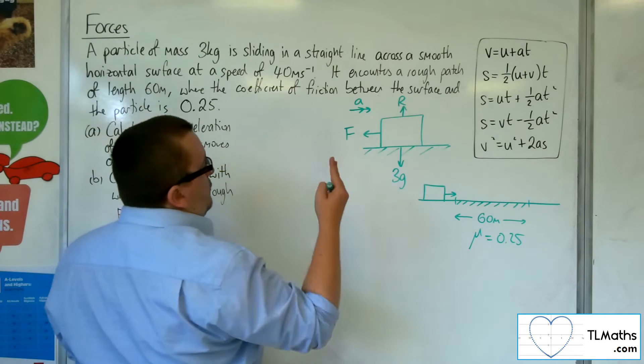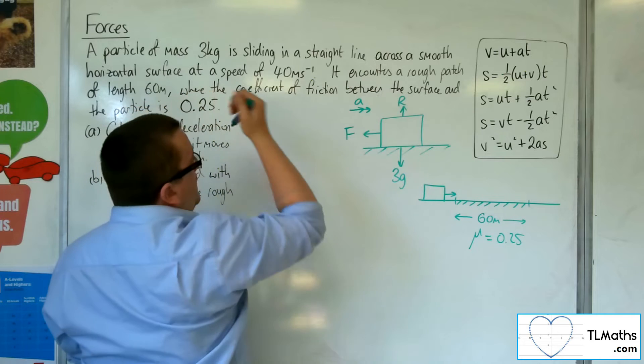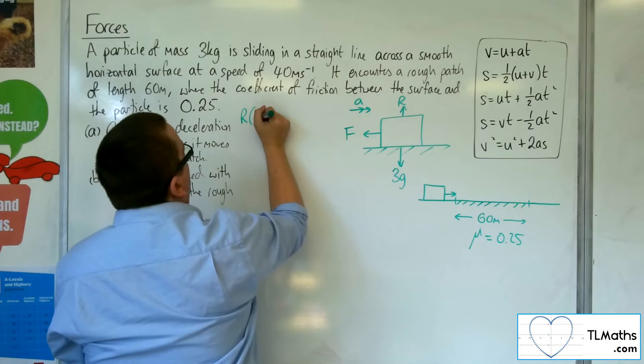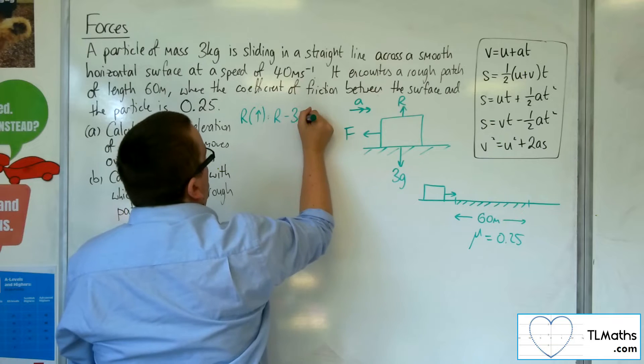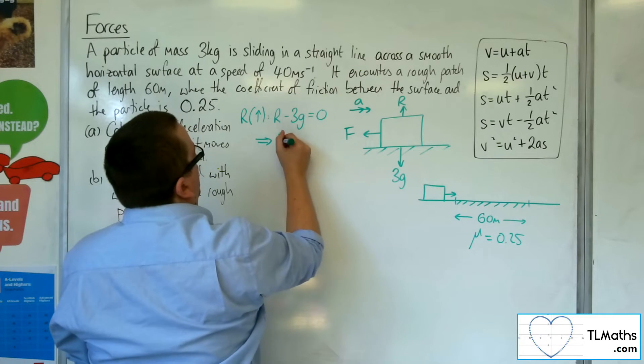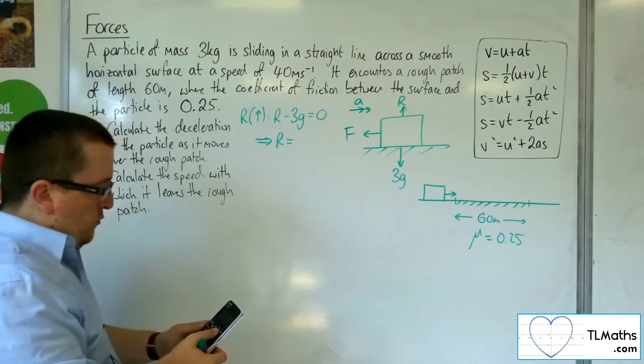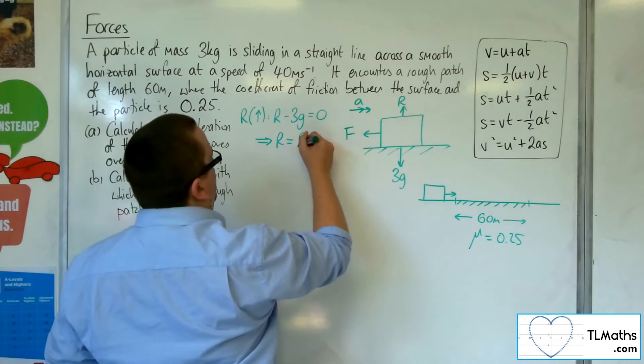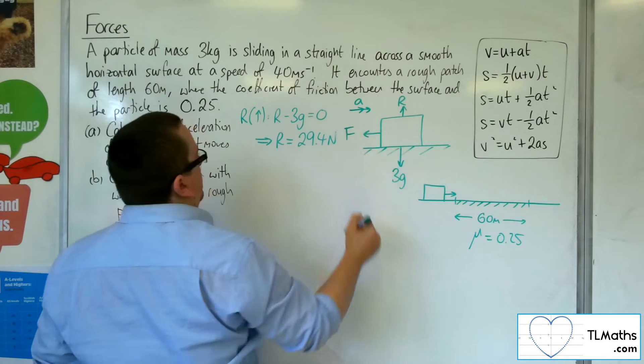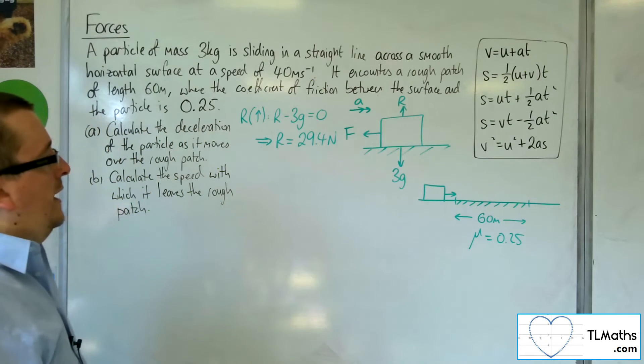So as there is no acceleration vertically, if I resolve it vertically, then I've got the normal reaction force, take away 3g, has got to be equal to 0. So the normal reaction force is just 3 lots of 9.8, which is 29.4. So 29.4 newtons, that's R.